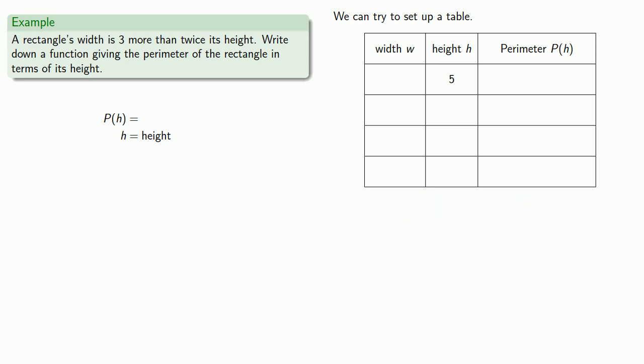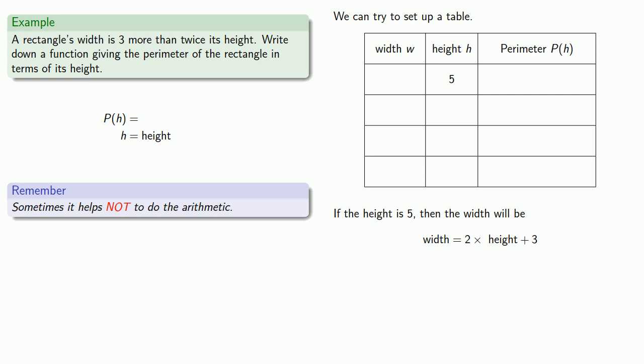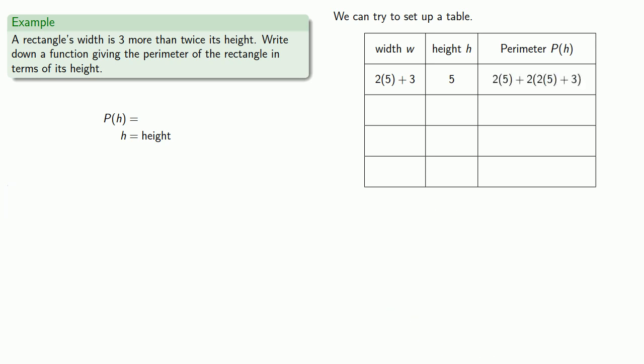So let's pick a value for the height. How about 5? We like 5. If the height is 5, then the width will be twice the height, plus 3. And again, it helps not to do the arithmetic, so we'll leave this as 2 times 5 plus 3. How about the perimeter? The perimeter of a rectangle will be twice the height, plus twice the width. And so that will be 2(5) + 2(2(5) + 3). And again, we're not going to do the arithmetic.